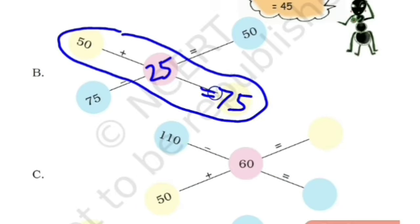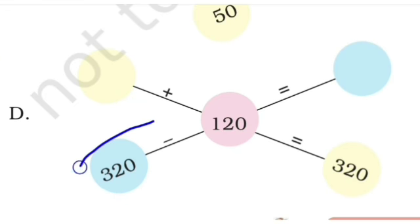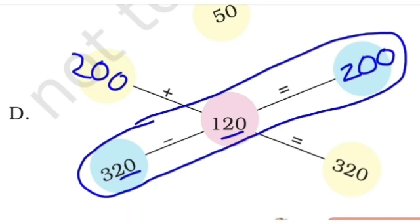Okay, and yes, you can write here, yes, 110. And oh sorry, yes, 110 minus 60 is equal to 50. Okay, yes, yes. The question is 320 minus 120 is equal to 200. Okay, similarly you can write here, yes, 120 plus 200 is equal to 200.